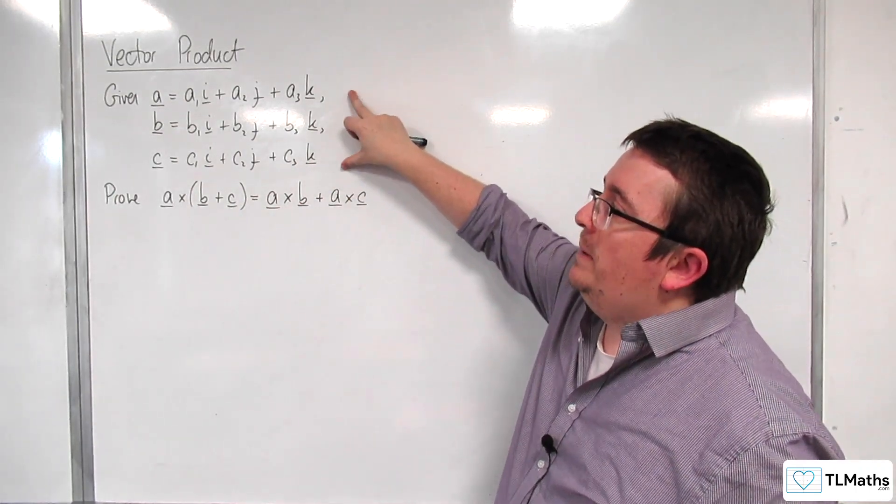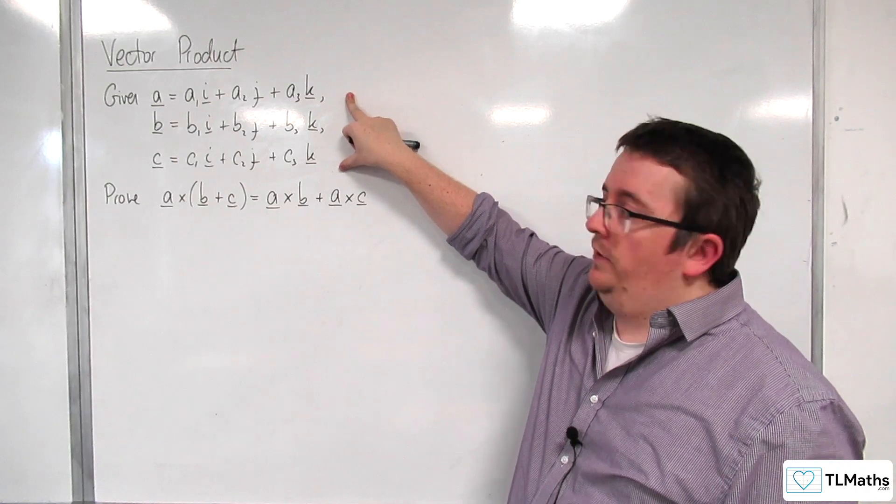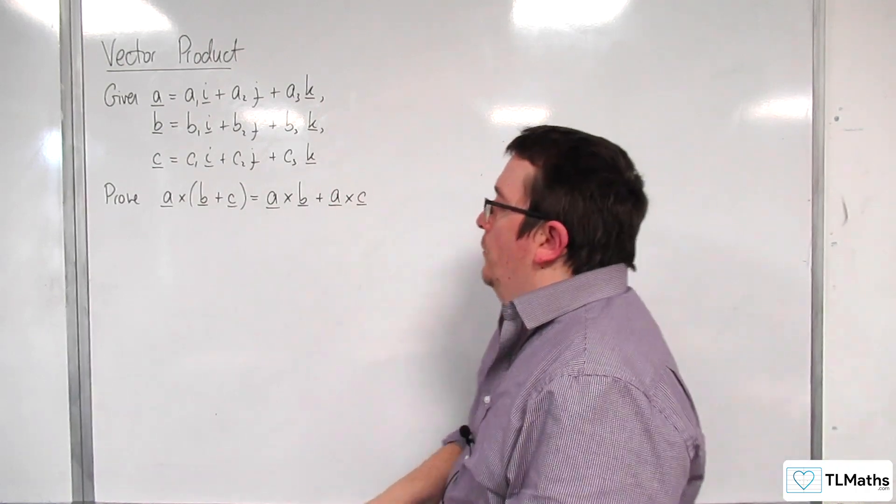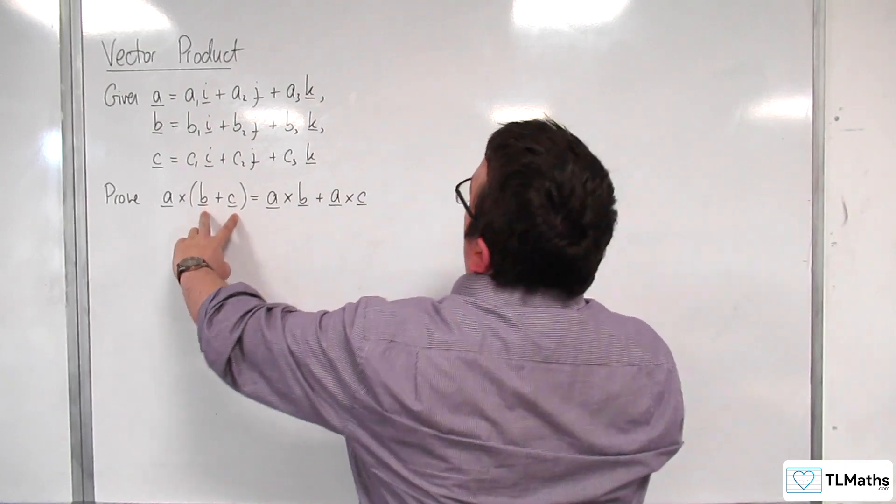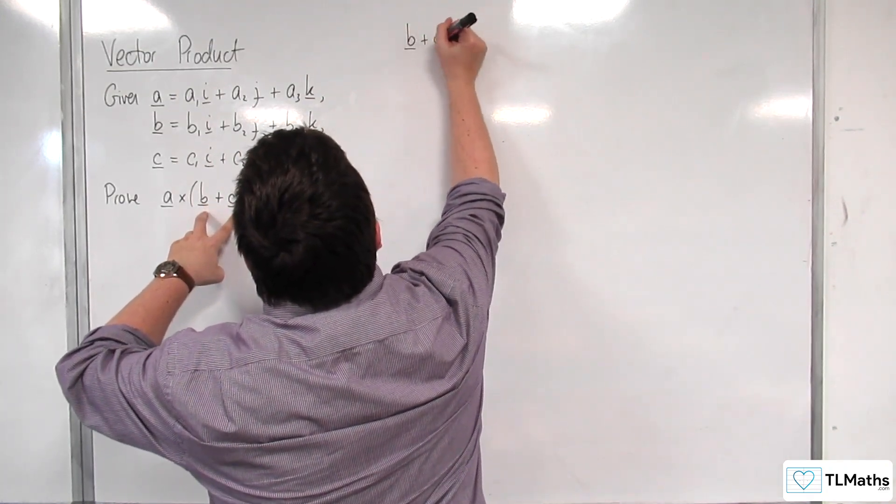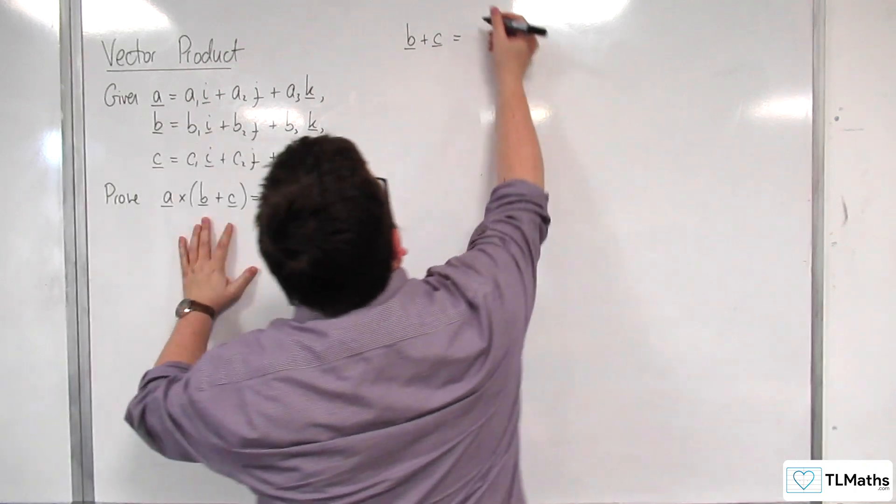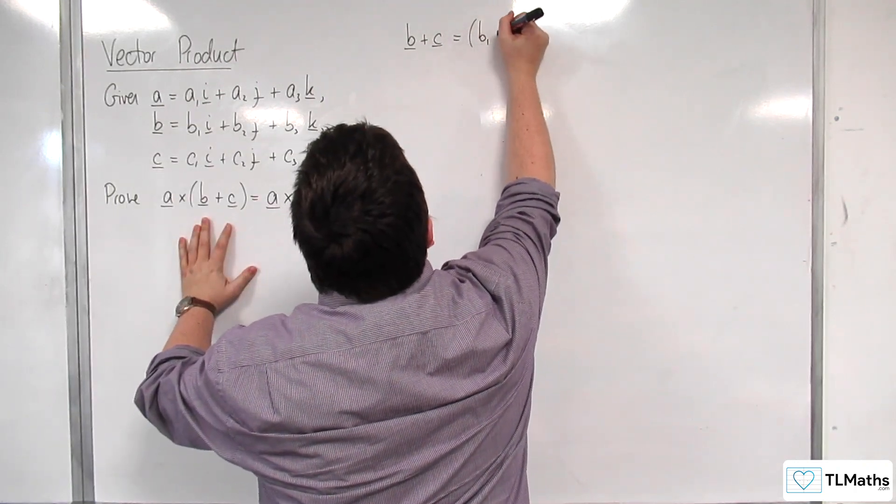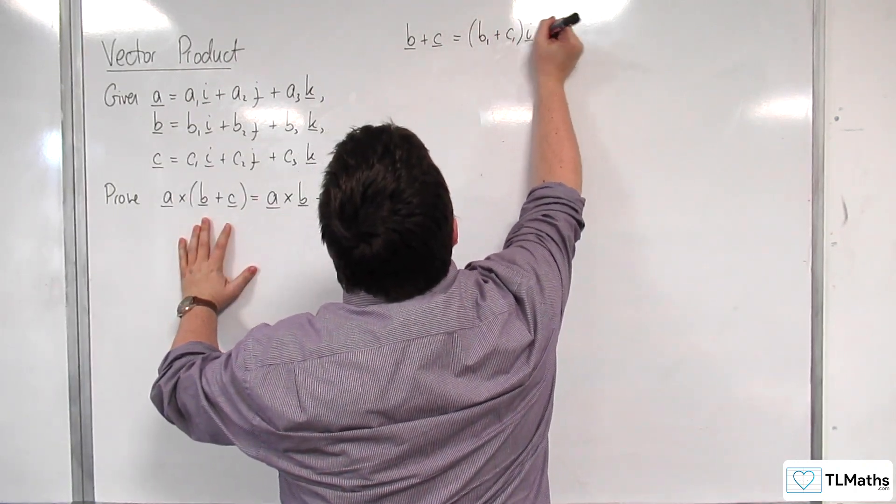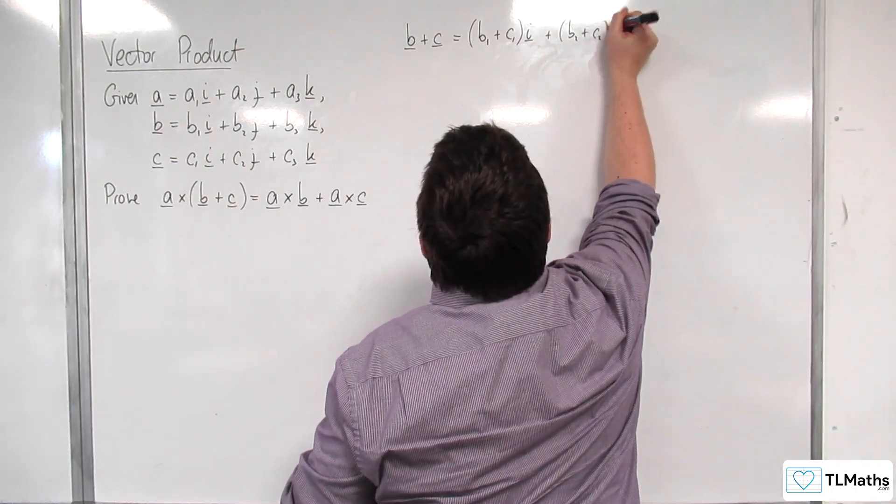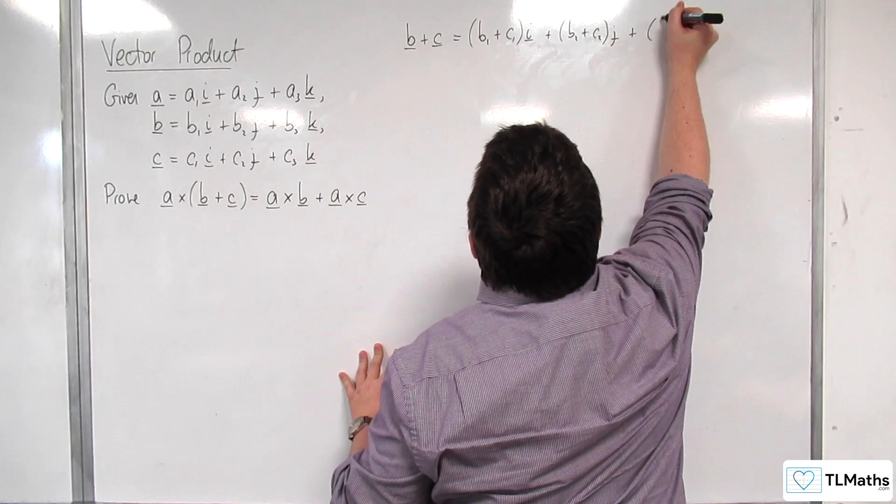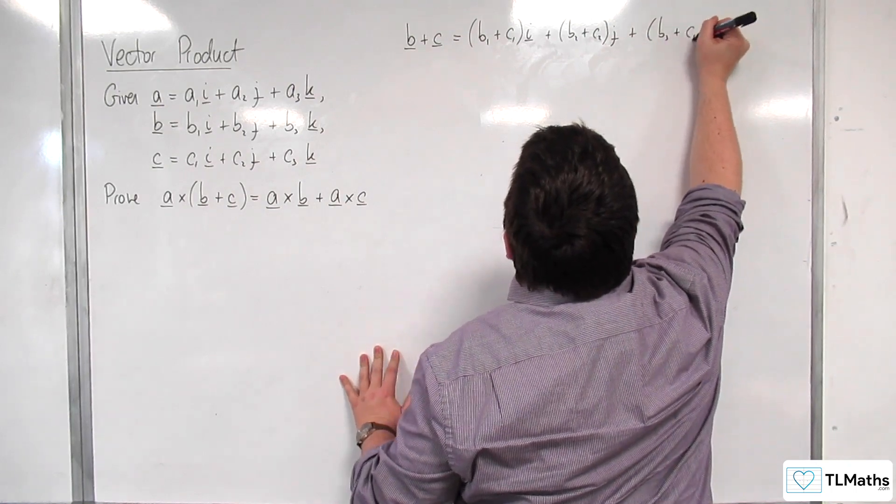So a cross of b plus c is equal to a cross b plus a cross c. And here we're defining a, b, and c as these general vectors. So the first thing I'm going to do is write down b plus c. So the vector b plus c would be equal to b1 plus c1 i plus b2 plus c2 j plus b3 plus c3 k.